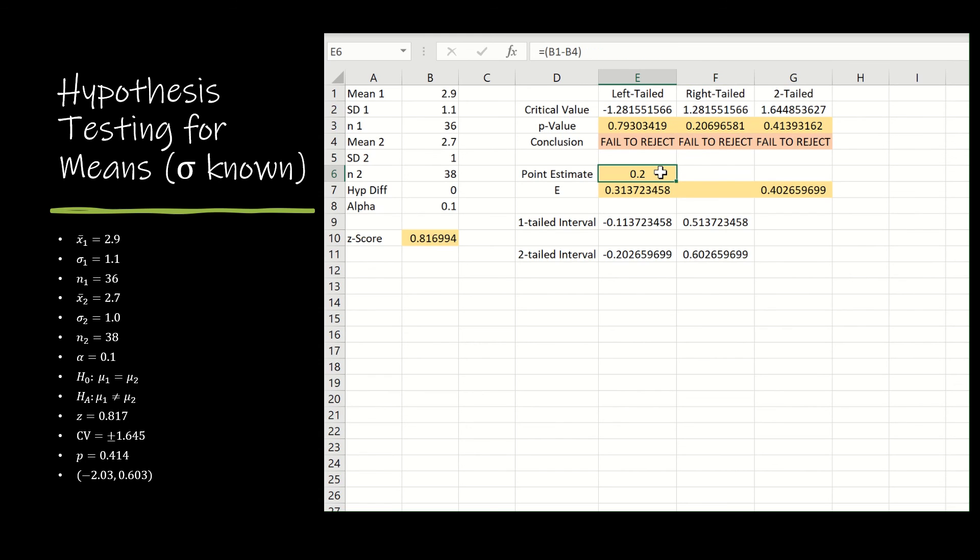Point estimate, same as it was before: first mean minus second mean. And E is the same as it was for a one-tailed test, except that I have to use the 1.645 critical value instead of the 1.282. And then I get all of the same values.